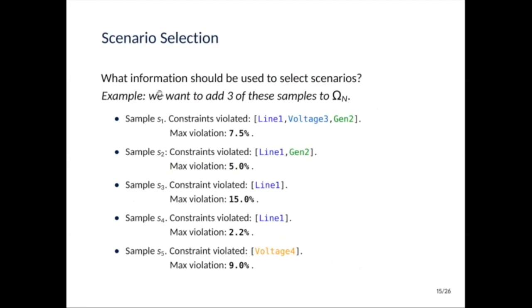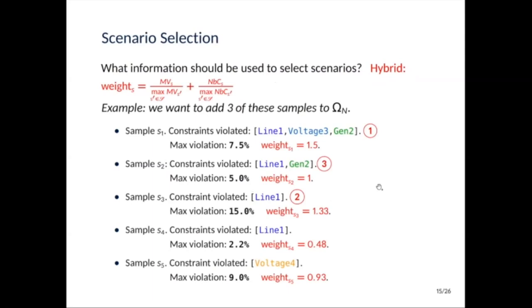So what is scenario selection? We'll go for example, and the question we want to ask is what information should be used to select the scenarios? For example, if you want to add three of these samples to omega n, what would you do? So for each sample, we will know which constraints are violated and what is the maximum violation of a constraint. So the first thing you can think of is the following: you will take just the maximum violation. And in that case, you will take sample three, where we have 15%, sample two, 9%, sample three is 7.5%. Or you could take the number of constraints, or something hybrid between the number of constraints and maximum violation.